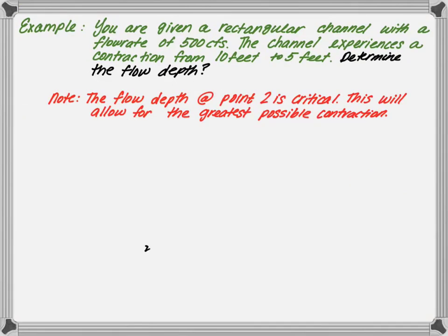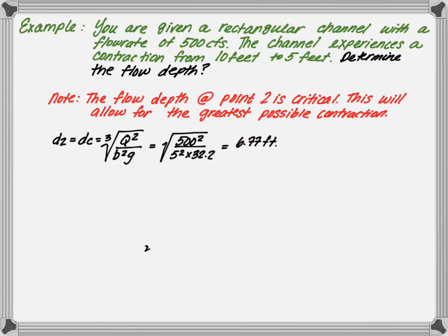The next example uses the same rectangular channel with a flow rate of 500 CFS. The channel experiences a contraction from 10 feet to 5 feet, and we want to determine the flow depth. The flow depth at point 2 has to be at critical depth, as this allows for the greatest possible contraction. The first step is to find critical depth: the cube root of 500² divided by 5² times 32.2, which gives a critical depth of 6.77 feet.